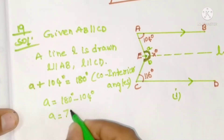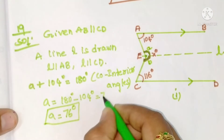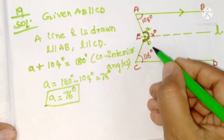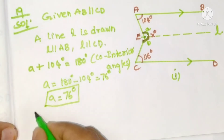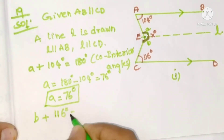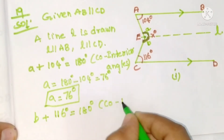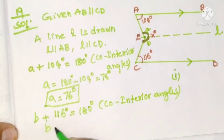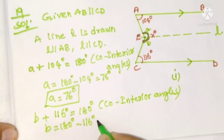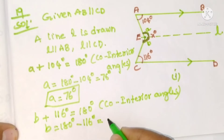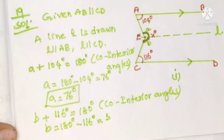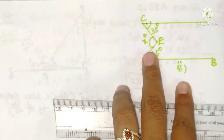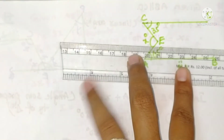So a equals 180 minus 104, which gives us 76 degrees. Similarly for b: b plus 116 degrees are also co-interior angles, so they are supplementary. b plus 116 equals 180 degrees. The reason is co-interior angles. So b equals 180 minus 116, which is 64 degrees. Now in the second figure, we want to find x the same way.